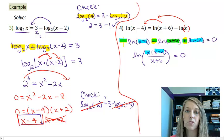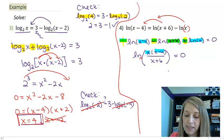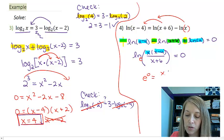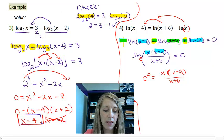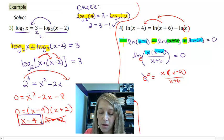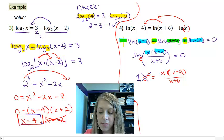Now if I convert this from logarithmic format into exponential format, I have base e, so that tells me I have e to the 0 power equals x times x minus 4 over x plus 6.